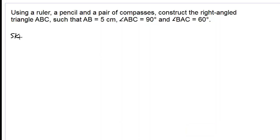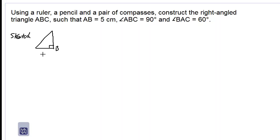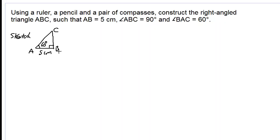Let's do a sketch of how the diagram should look. We have our right angle triangle. Angle ABC is 90 degrees — B is the letter in the middle, so angle ABC is 90 degrees. Angle BAC is 60 degrees — A is the letter in the middle, so this is our 60 degree angle here. The length AB is 5cm. Let's now construct this triangle using a ruler, a pencil, and a pair of compasses.